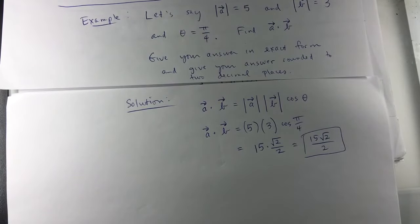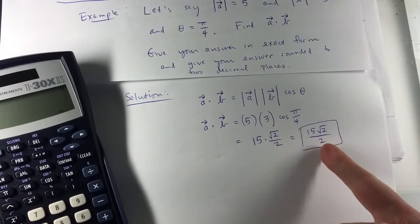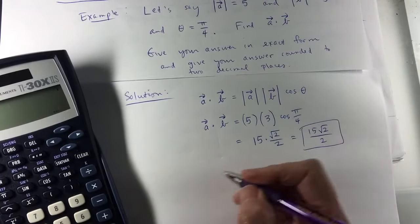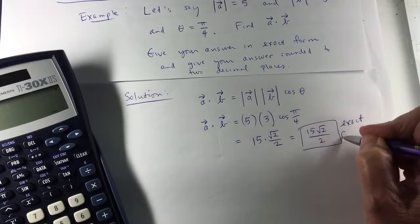Now for the calculator, for the rounding part, I would type this in my calculator. So this is the exact form. Let me label that.